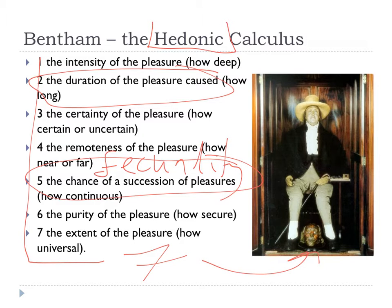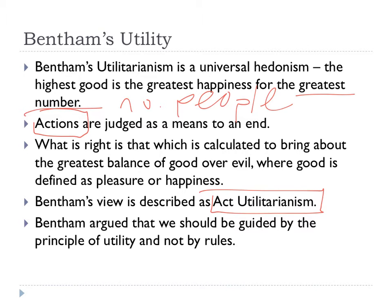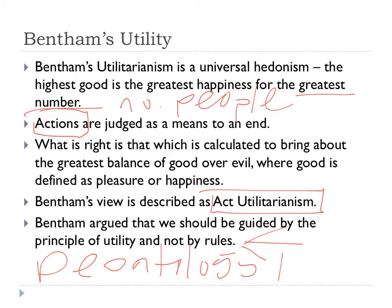This is Jeremy Bentham's real dead head, which was not embalmed very successfully, so they replaced it with a waxy head. The rumours of them kicking it around as a football were probably not true. What's key here is that the greatest good is the greatest happiness for the greatest number. So the priority for Bentham is to calculate how many people are affected, which means that we can wind up prioritising the majority over the minority, regardless of what action is being committed. Actions are judged as a means to an end, and we have come to call this act-utilitarianism. We should not follow rules, which is the opposite of deontology — the opposite of a philosopher like Immanuel Kant.